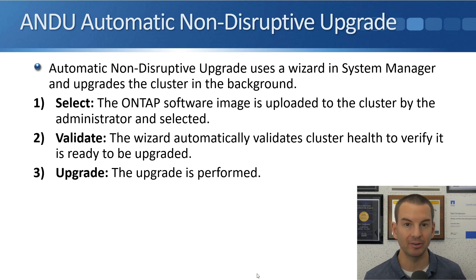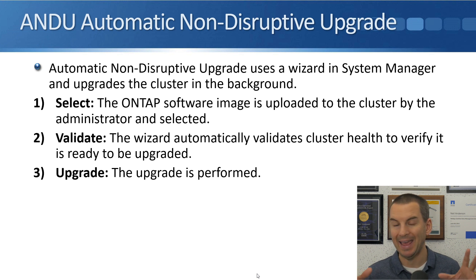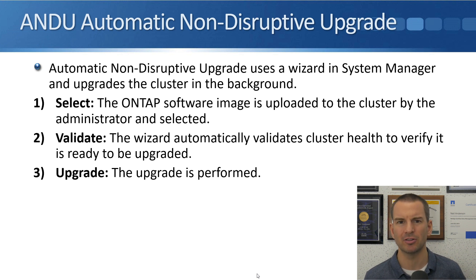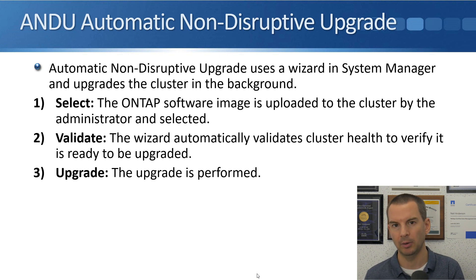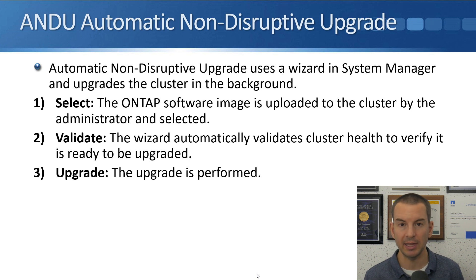The next stage is Validate. At this stage, the System Manager wizard automatically validates cluster health to verify that the cluster is ready to be updated. It performs a range of checks to make sure everything is healthy. If there are issues on your cluster, you don't want to be upgrading at that time. If it doesn't pass the Validate stage, the wizard won't let you proceed — it gives you a full report of issues and the remedial action needed. You go and fix those issues, then come back and try again. Finally, when it passes Validate, the last stage is Upgrade, where the upgrade is actually performed.